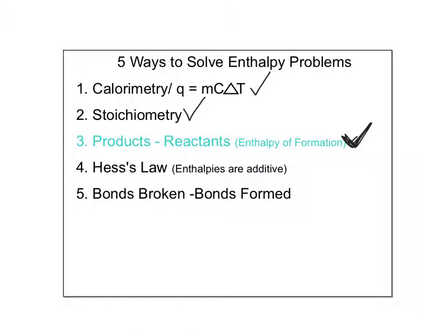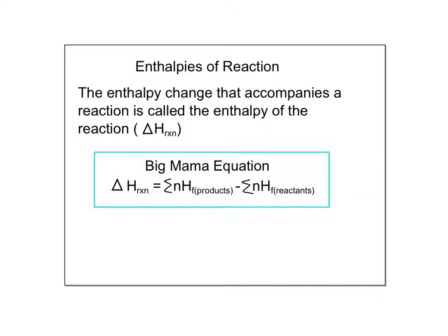If you want to identify if it's a products minus reactants problem, you're looking for delta H of formations provided in a list or data table. If they say go to the back of the textbook or refer to the table about heat of formation, it's a sign that it's products minus reactants. I call this the big mama equation: the heat of reaction equals the sum of the moles times the heat of formation of the products minus the sum of the moles times the heat of formation of the reactants.